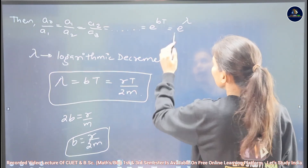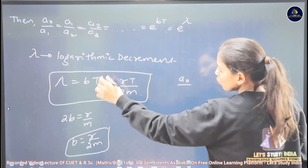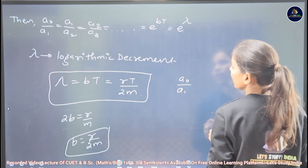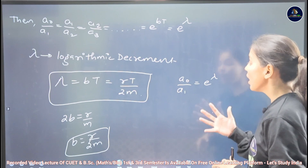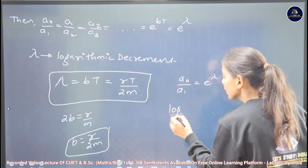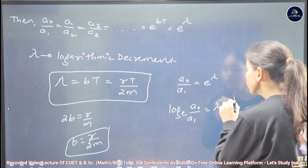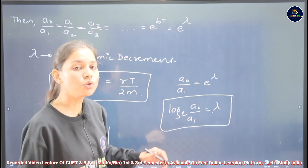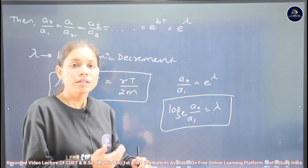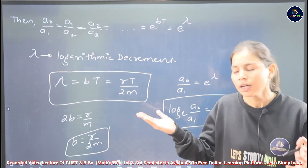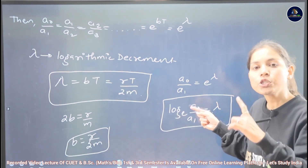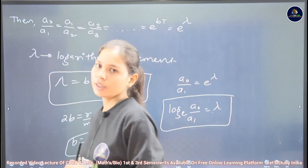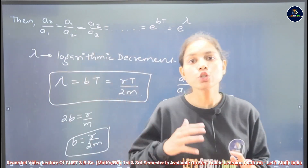This value λ represents the logarithmic decrement — the rate at which amplitudes reduce. If we consider the ratio A₀/A1 = e^λ and take the natural logarithm, we get: ln(A₀/A1) = λ. So λ is the natural logarithm of the ratio of two amplitudes separated by one time period. This is the logarithmic decrement of the damped oscillator.